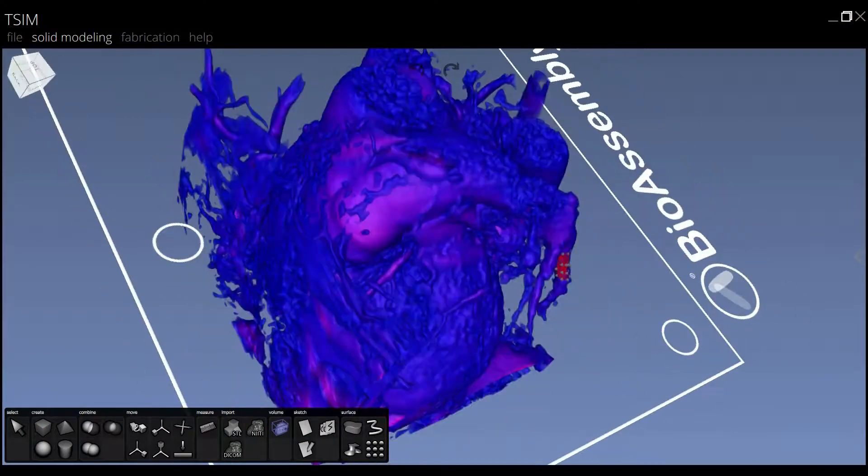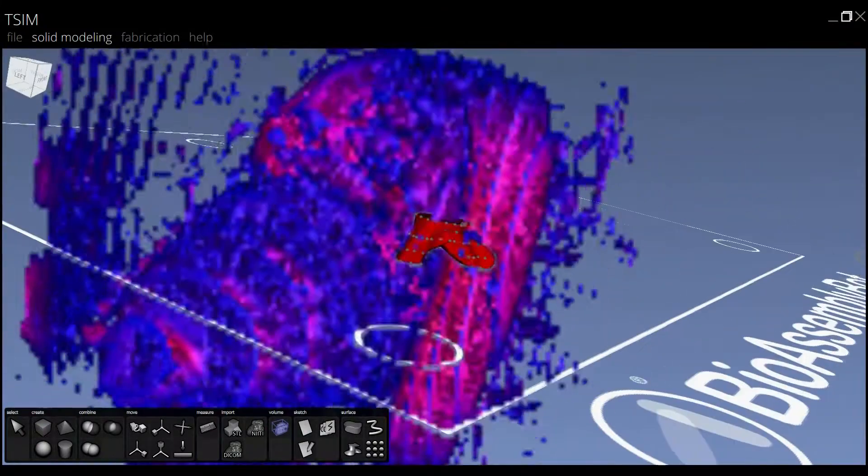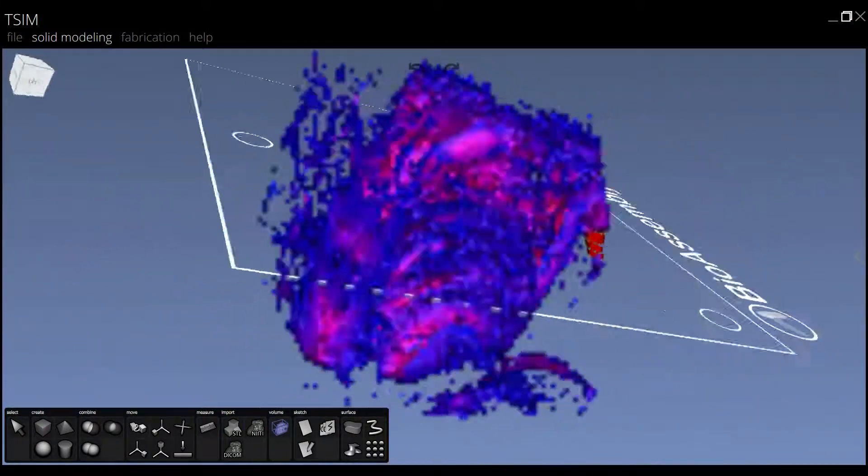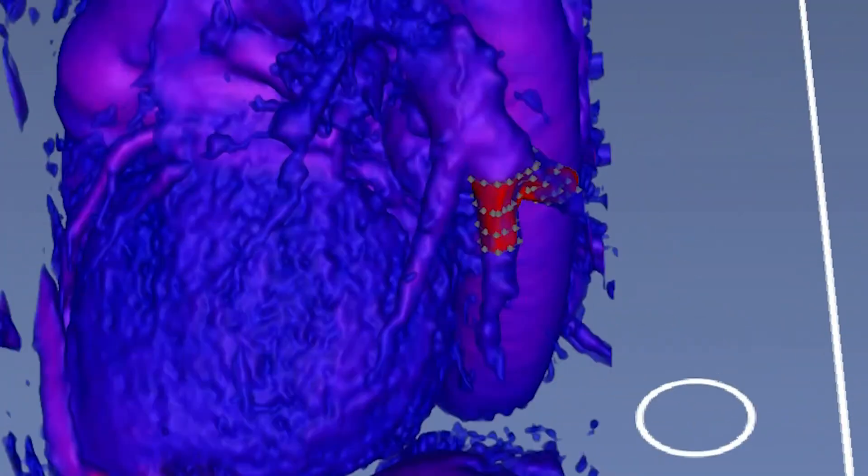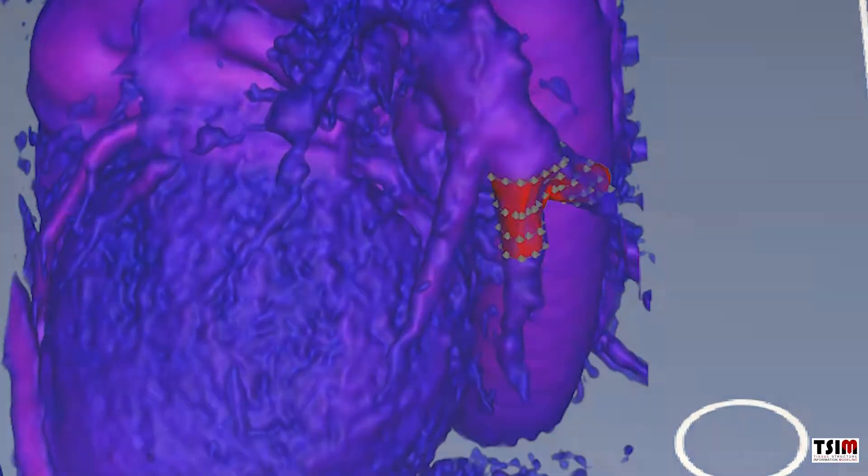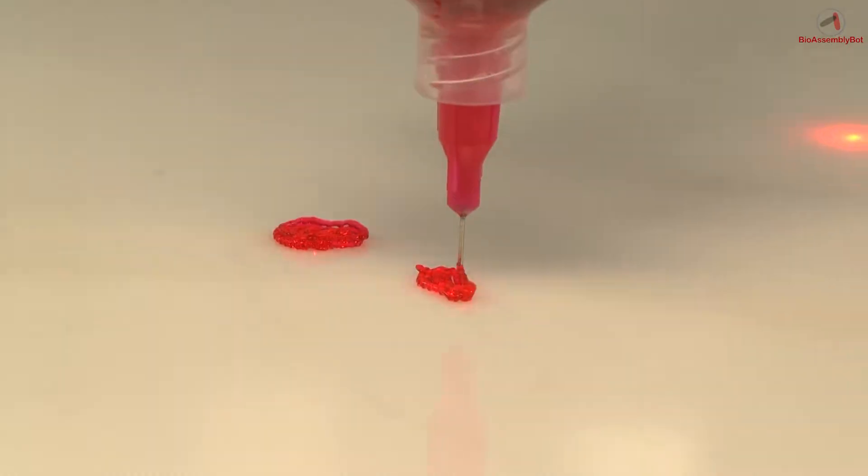In this particular example, we'll be printing a segment of the pulmonary artery tree. The pulmonary artery supplies blood to the lungs from the heart and allows the blood to be oxygenated as it returns back to the heart and goes to the rest of the body. It often is diseased in patients.